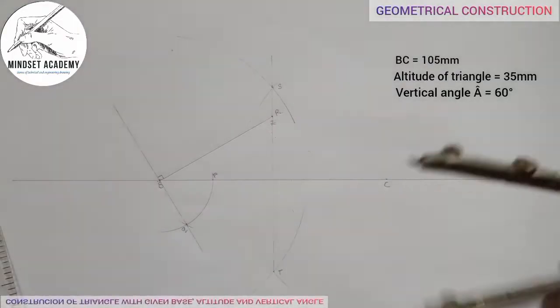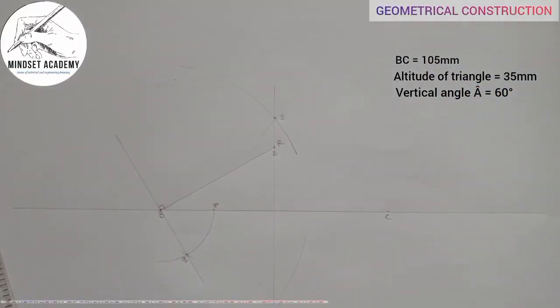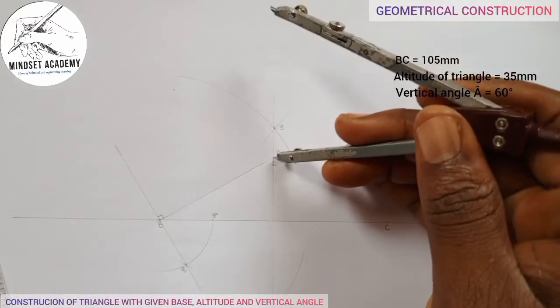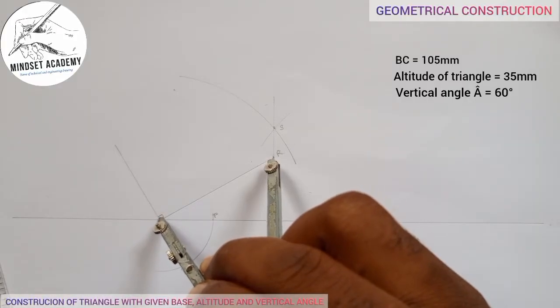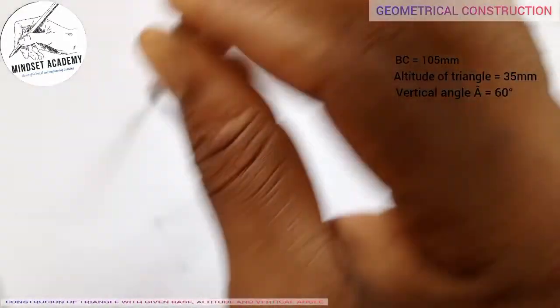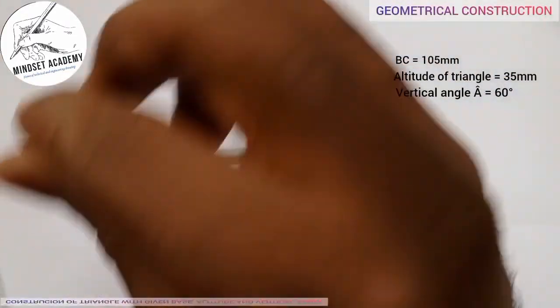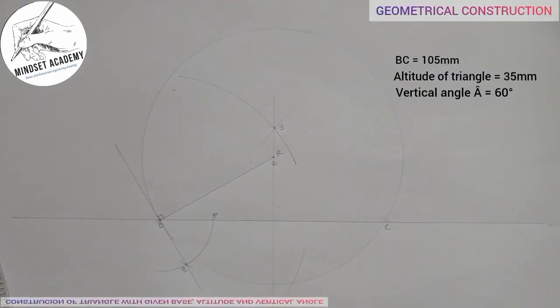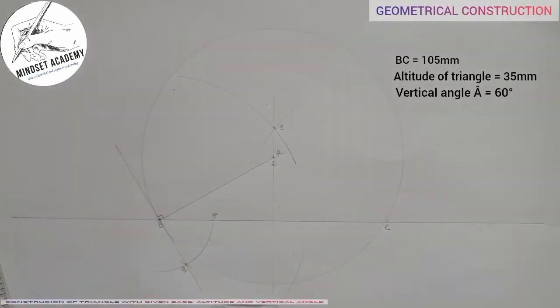I'll now take my compass and place it at Z with radius of B. I'll draw a circle. You can see the circle I'm drawing. The circle I just drew here. Now, what I will now do is we're told that the altitude of the line is 35 mm.